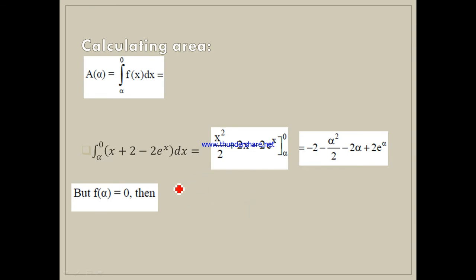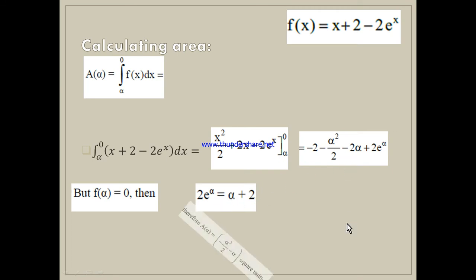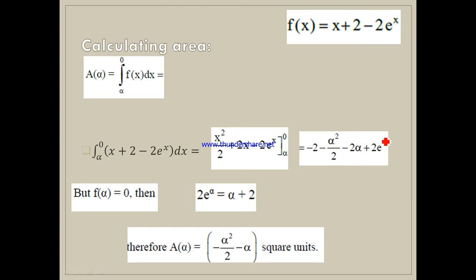But f(α) = 0, as given. We have f(x) = x + 2 − 2eˣ; replacing x by α gives α + 2 − 2eᵅ = 0, so 2eᵅ = α + 2. Now we come back and replace 2eᵅ by (α + 2). The terms −2α + α − α and −2 + 2 eliminate, giving us −α² square units.